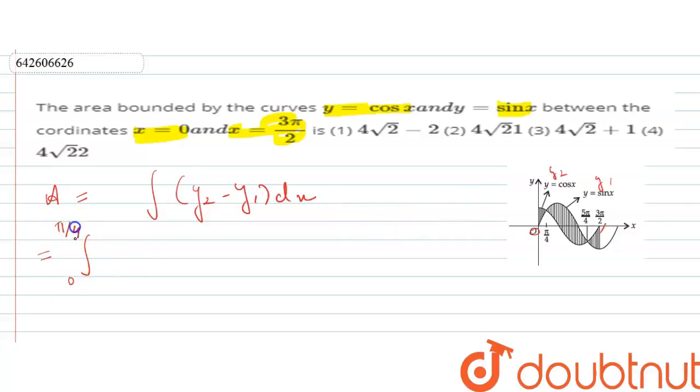And from π/4 to 5π/4, the range from π/4 to 5π/4, here sin x is leading, so it becomes sin x minus cos x dx.